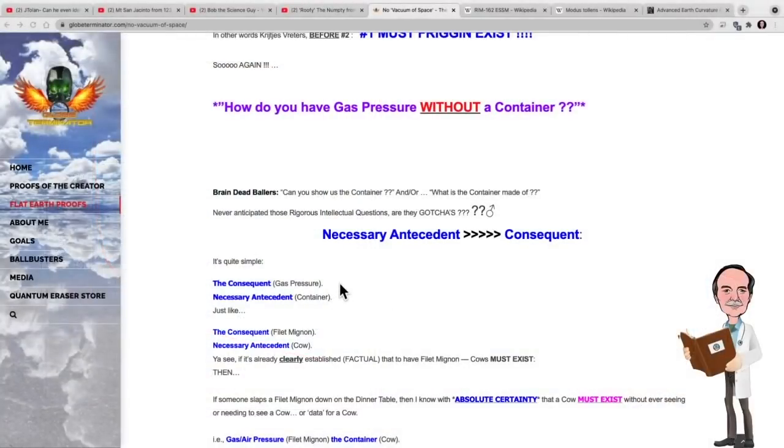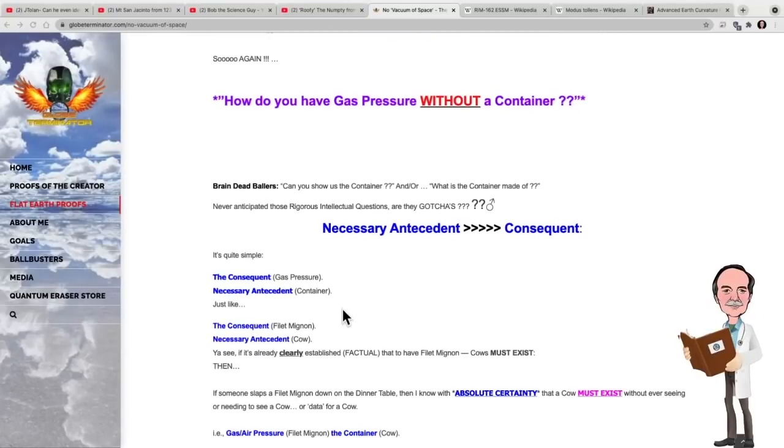Okay. Consequent: gas pressure. Necessary antecedent: container. No. That's not the case. You see, this is again a fallacious argument because it is not a necessary antecedent to gas pressure to have a container. You can do it by applying a force to the mass of the gas. In other words, performing work on the system.